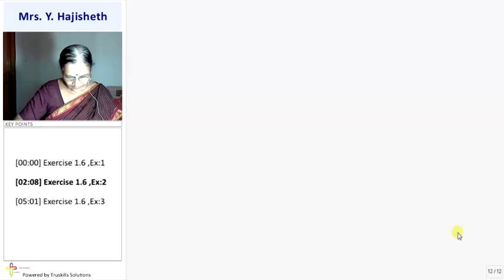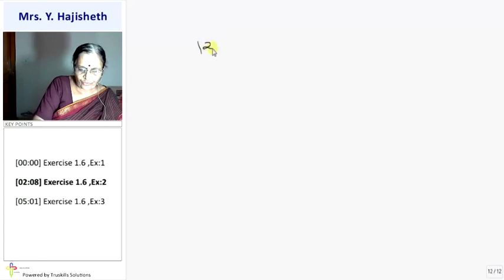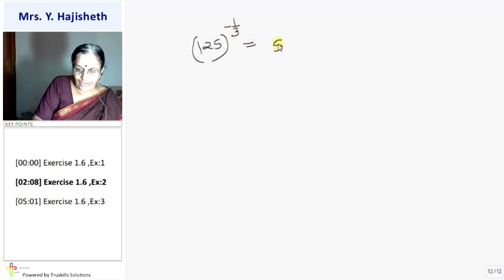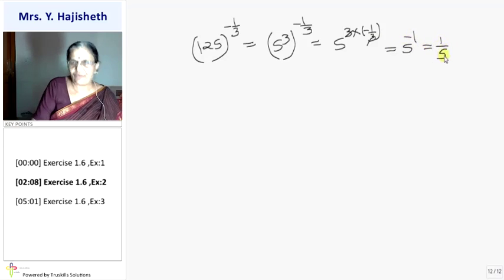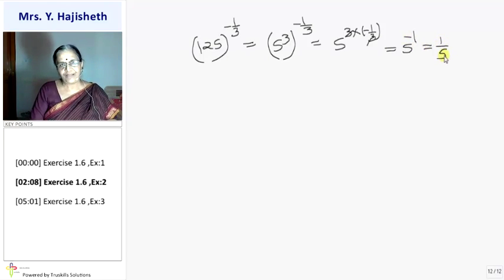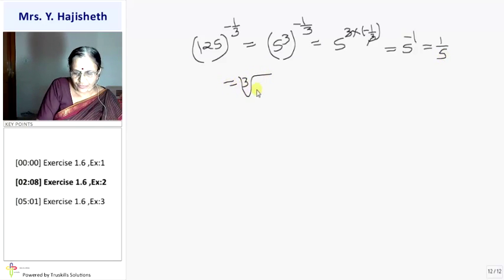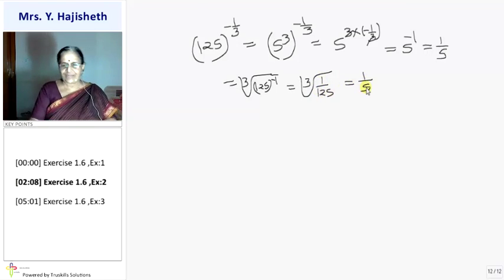Next sum: 125 raised to minus 1 by 3. Since 125 is 5 cubed, it becomes 5 cubed raised to minus 1 by 3, which is 5 raised to 3 into minus 1 by 3 = 5 raised to minus 1 = 1 by 5. Alternatively, cube root of 125 raised to minus 1 is cube root of 1 upon 125, which is also 1 by 5.